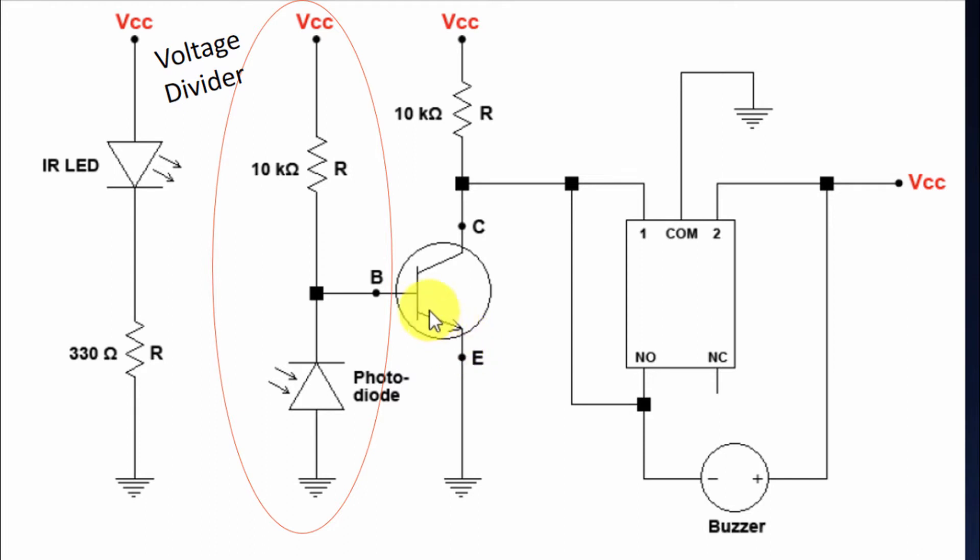The PN junction which is present here in the transistor, we are using a basic BC547 transistor, will become in the forward bias and hence the transistor will be in on state.